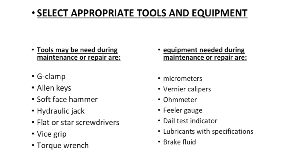Tools needed for maintenance or repairing brakes and clutches: jig lamps, Allen keys, soft face hammers, hydraulic jacks with flat and star screwdrivers, and a vice grip with a torque wrench. Equipment needed: micrometers, vernier calipers, ohmmeters, feeler gauges to measure the gap, dial test indicators to check the roundness of the shafts, lubricant with specifications, and brake fluid.